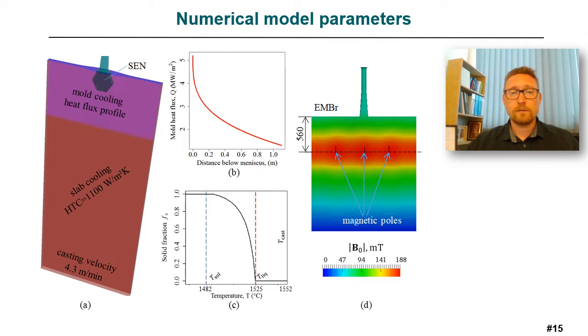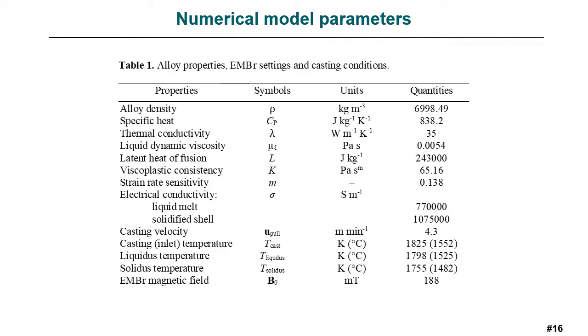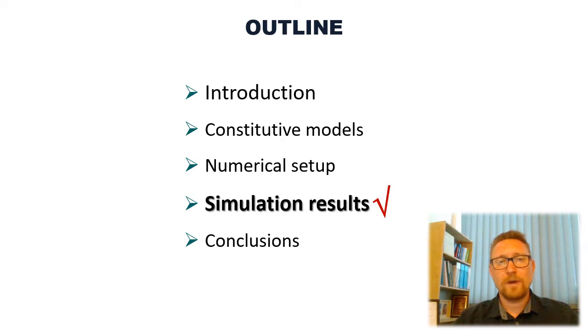Solidification model is defined by the heat flux profile in the mold region, by the constant heat transfer coefficient in the secondary cooling zone, and by the corresponding solidification curve. The MHD effects are defined by the distribution of the magnetic field in the simulation domain. Alloy properties, casting conditions, and magnetic field settings are listed here in the table. Based on the presented settings and the numerical models, following results were obtained.